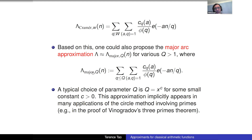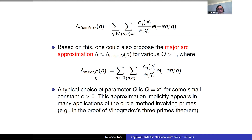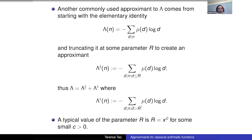This major arc approximation can be computed with high accuracy, and the circle method works by rigorously replacing the von Mangoldt function by this major arc approximation in certain cases. For example, to prove Vinogradov's three primes theorem — that every large odd number is a sum of three primes — you express the prime count as a Fourier expression involving Λ, replace Λ by the major arc approximation (the error turns out manageable), then compute the major contribution.